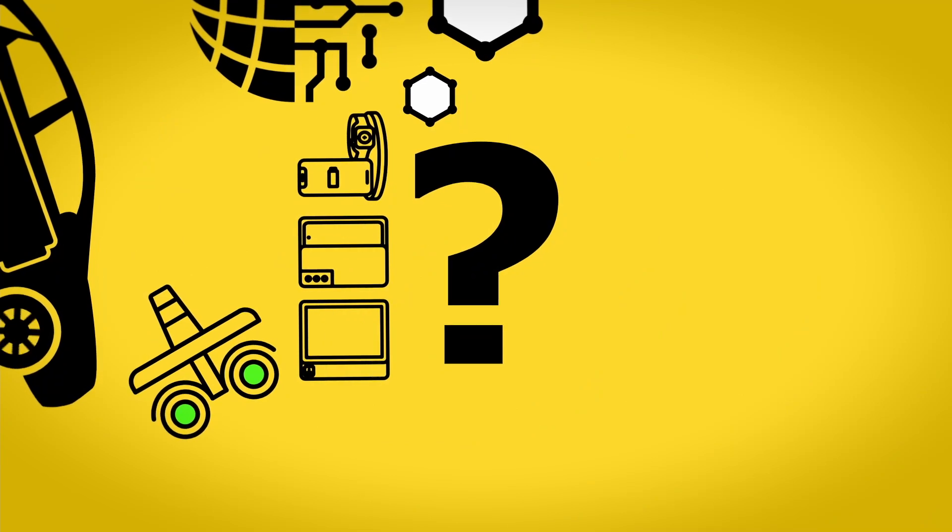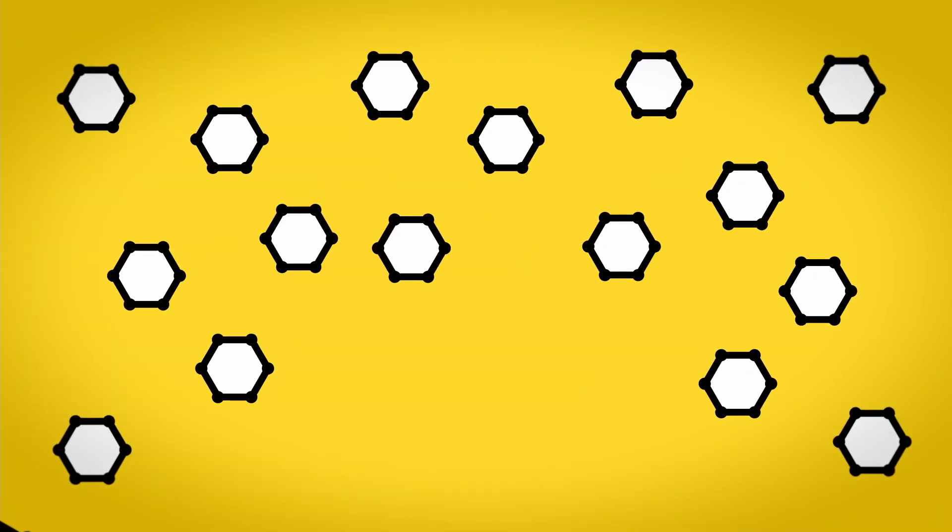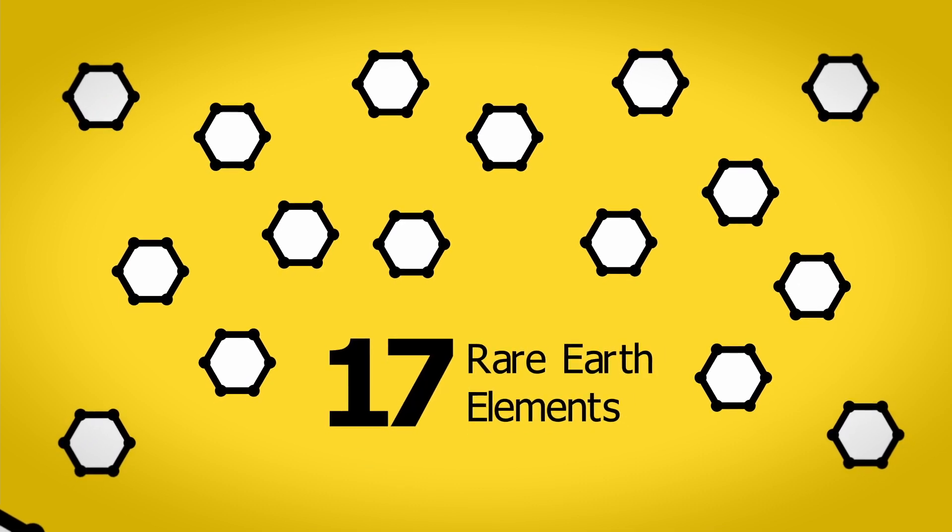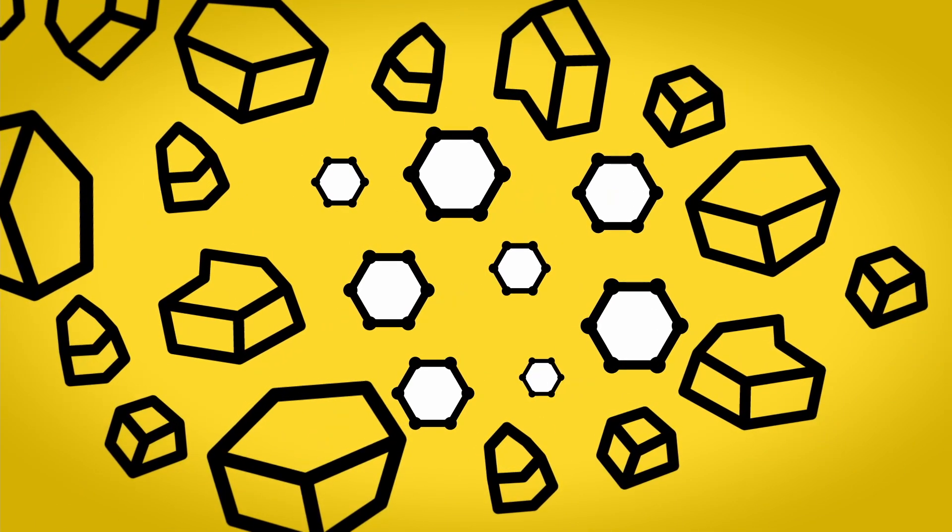What does that mean? Let's go back to basics. Rare earth elements are a group of 17 elements that are incredibly tightly bound within a lot of hard minerals, like those in granite.